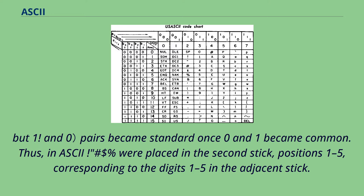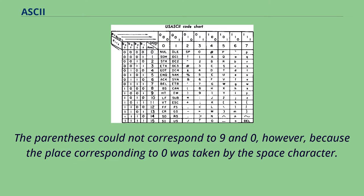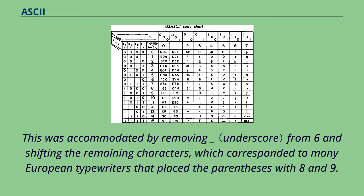Thus in ASCII, hash, dollar, and percent were placed in the second column, positions 1 to 5, corresponding to the digits 1 to 5 in the adjacent column. The parentheses could not correspond to 9 and 0, however, because the place corresponding to 0 was taken by the space character. This was accommodated by removing underscore from position 6 and shifting the remaining characters, which corresponded to many European typewriters that placed the parentheses with 8 and 9.